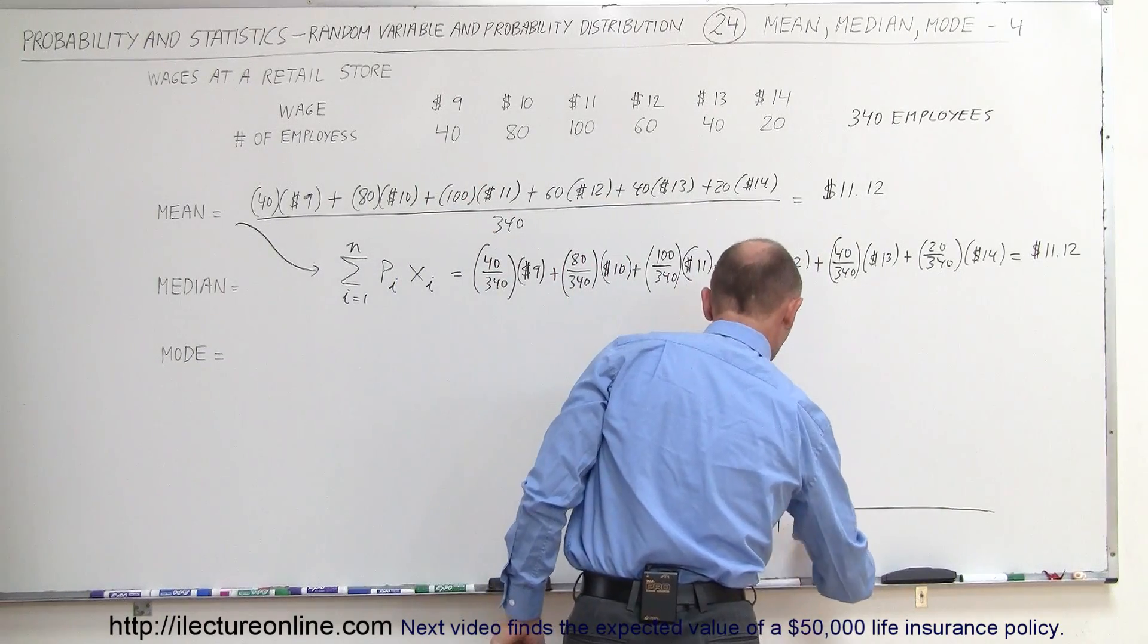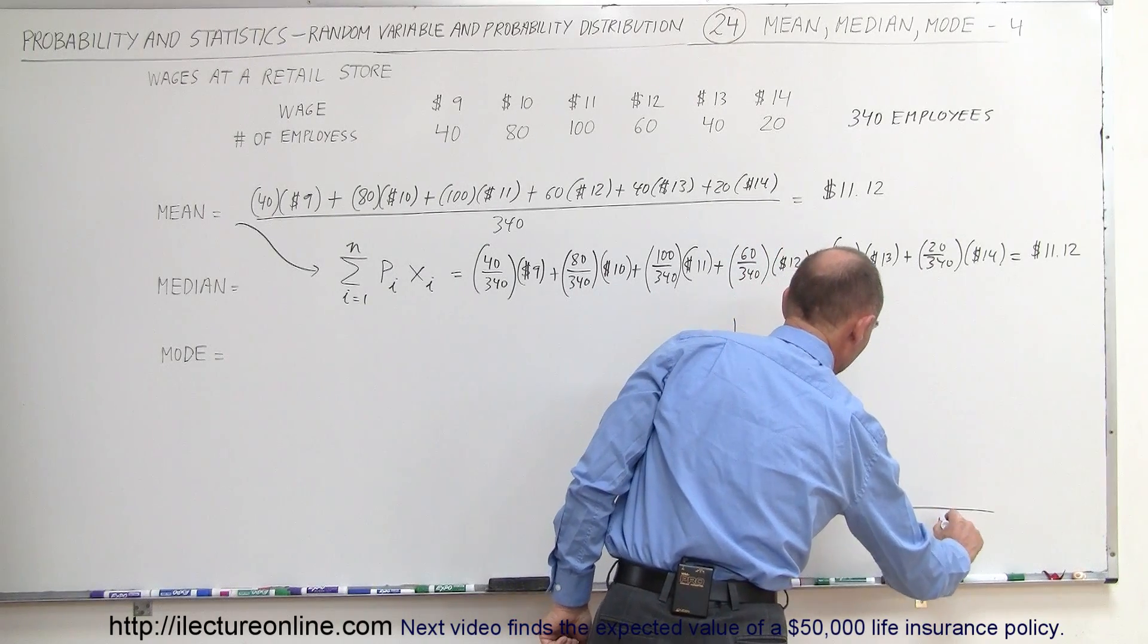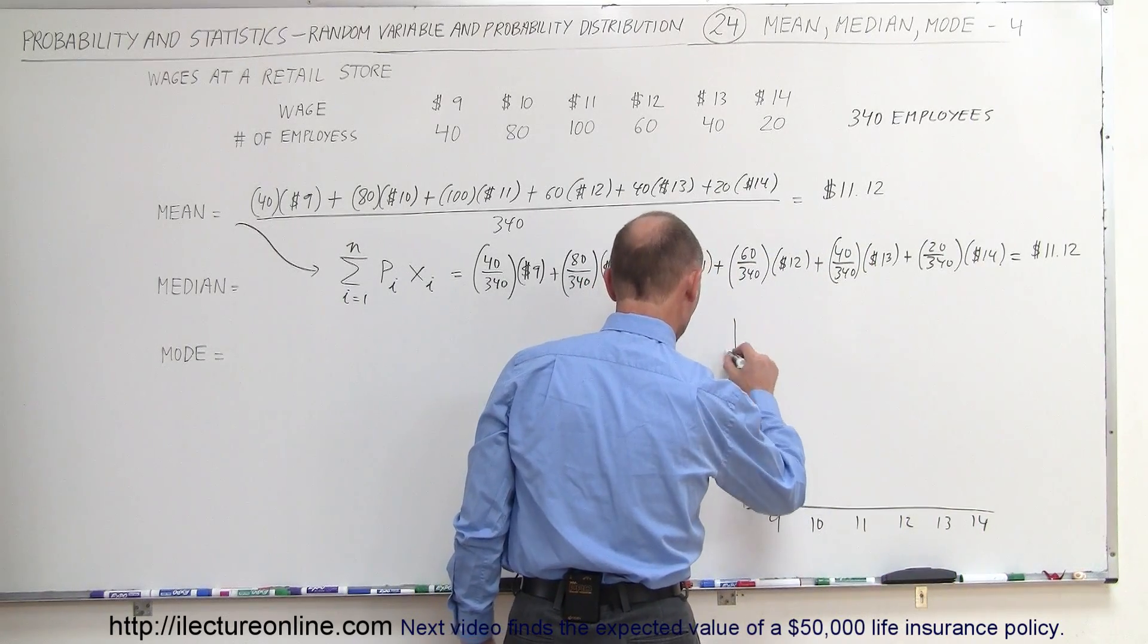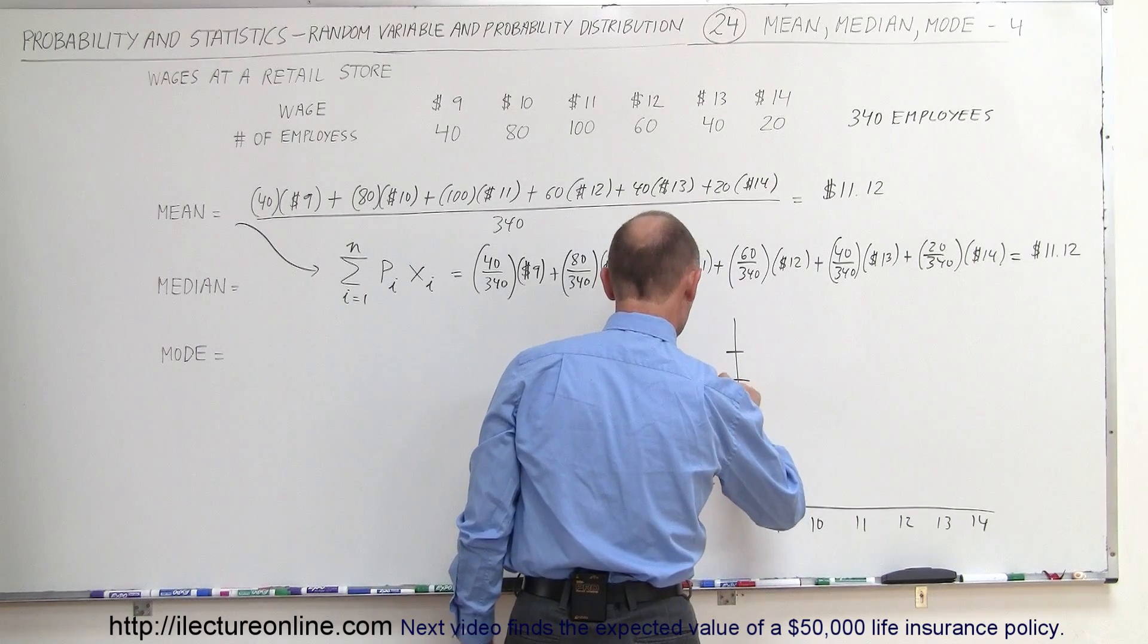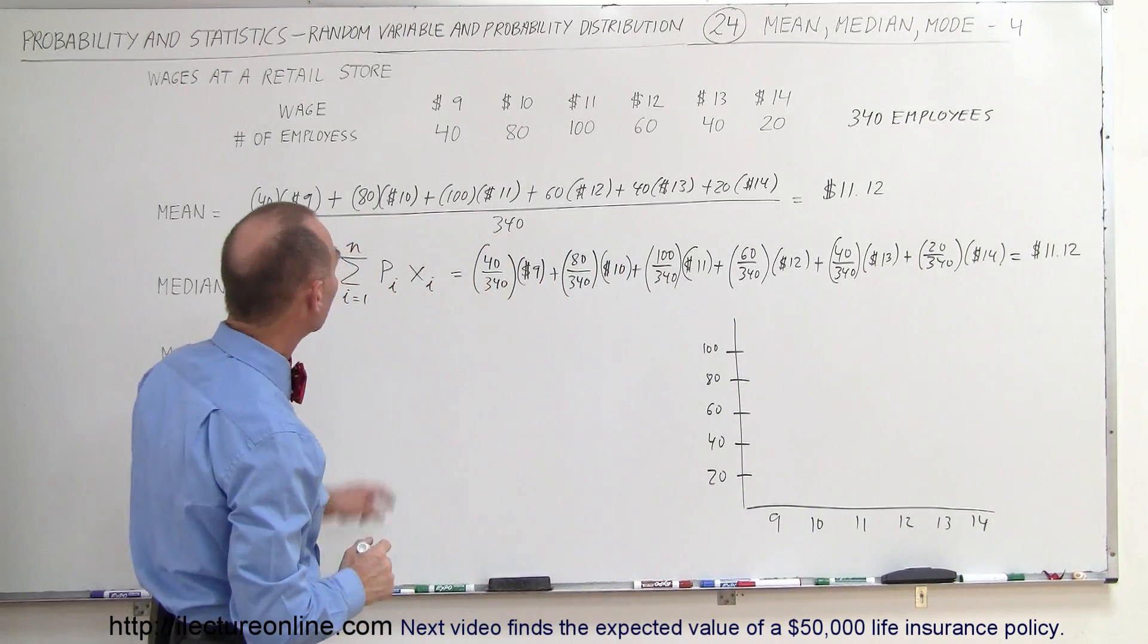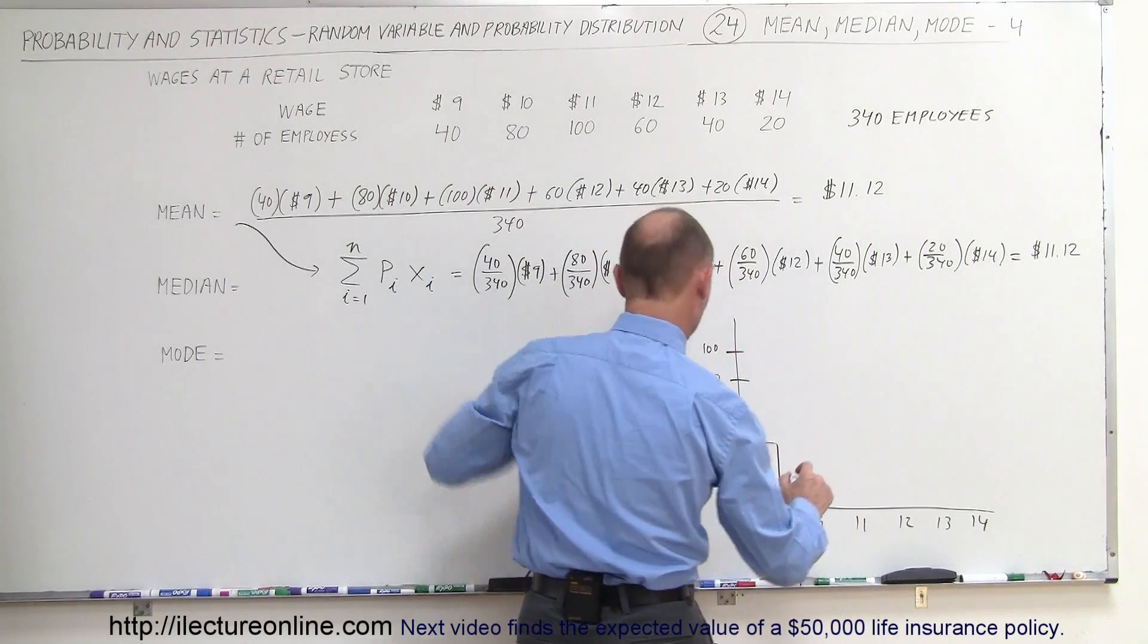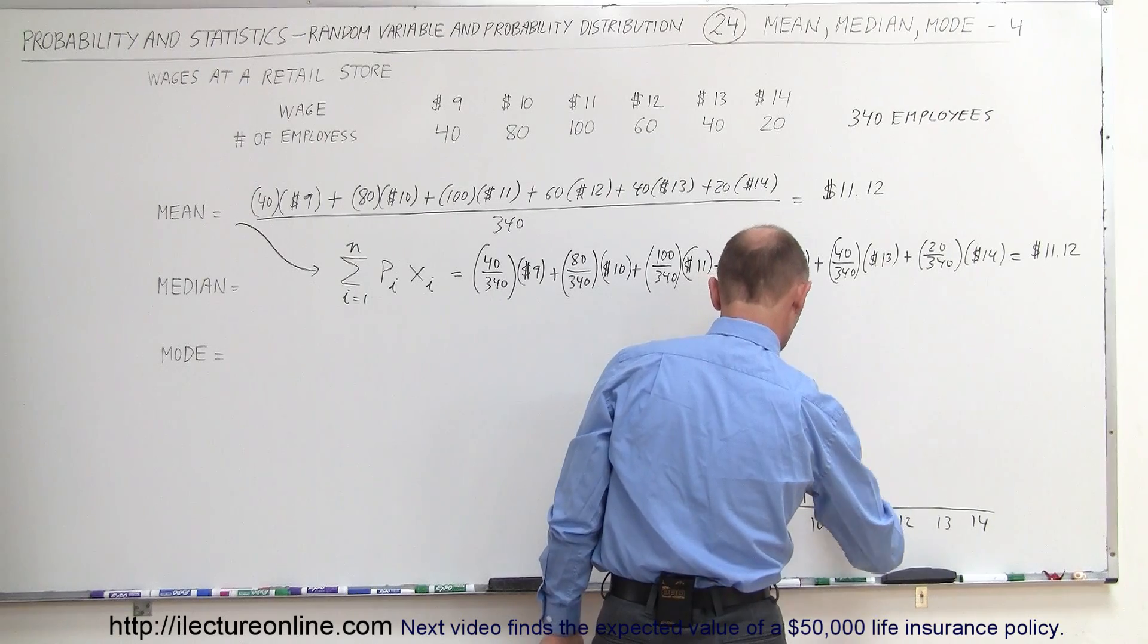And so we have $9, $10, $11, $12, $13, and $14. And so let's call this 20, 40, 60, 80, 100. The number of people earning that. And let's go ahead and draw a bar. So for $9 an hour, we have 40 people earning that much money. $10 an hour, we have 80 people.